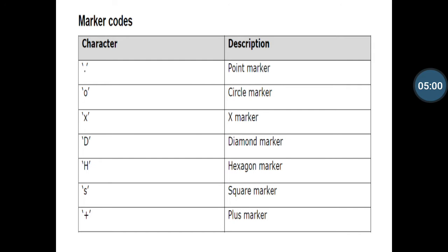And then after I am defining another table for markers code. That is basically depicting the line as a point marker, circle marker, X marker, diamond marker, hexagonal marker, square marker, plus marker, etc. So this table is defined into two parts: the characters and the descriptions.